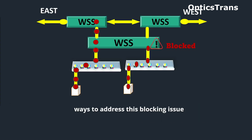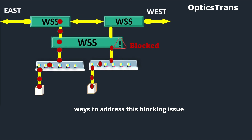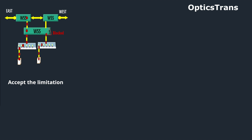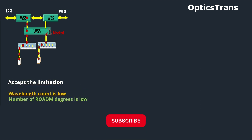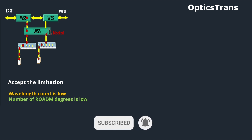So while doing planning or in the field, there are a few ways to address this blocking issue. The most common is to just accept this limitation. In cases where the wavelength count is low and the number of ROADM degrees is low, the likelihood of facing a blocking issue is low, and simple directionless architecture is sufficient and more cost effective.